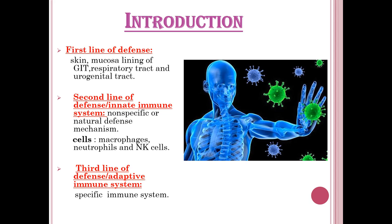The cells of the innate immune system include macrophages, neutrophils, and NK cells. The third line of defense is the adaptive immune system, also called the specific immune system.